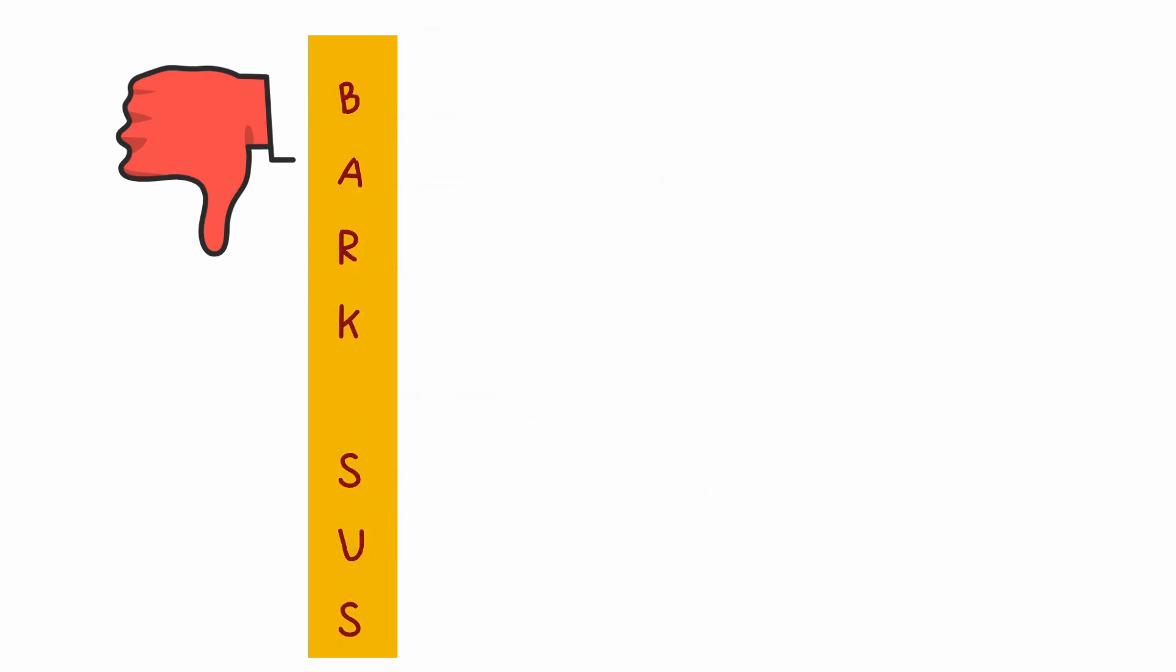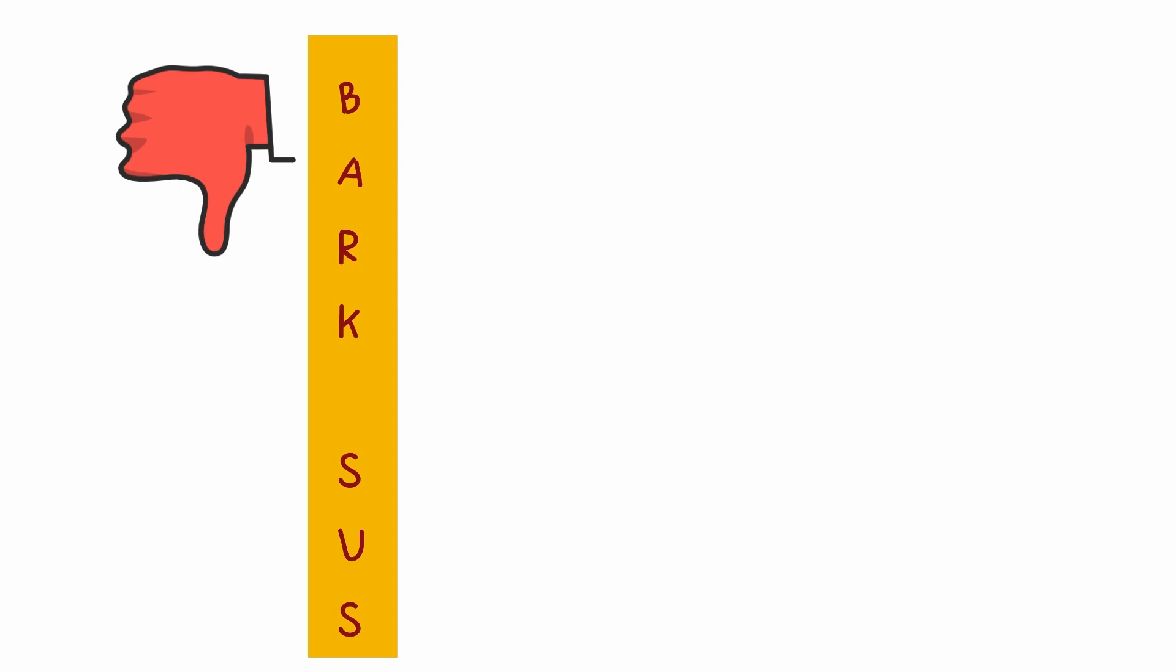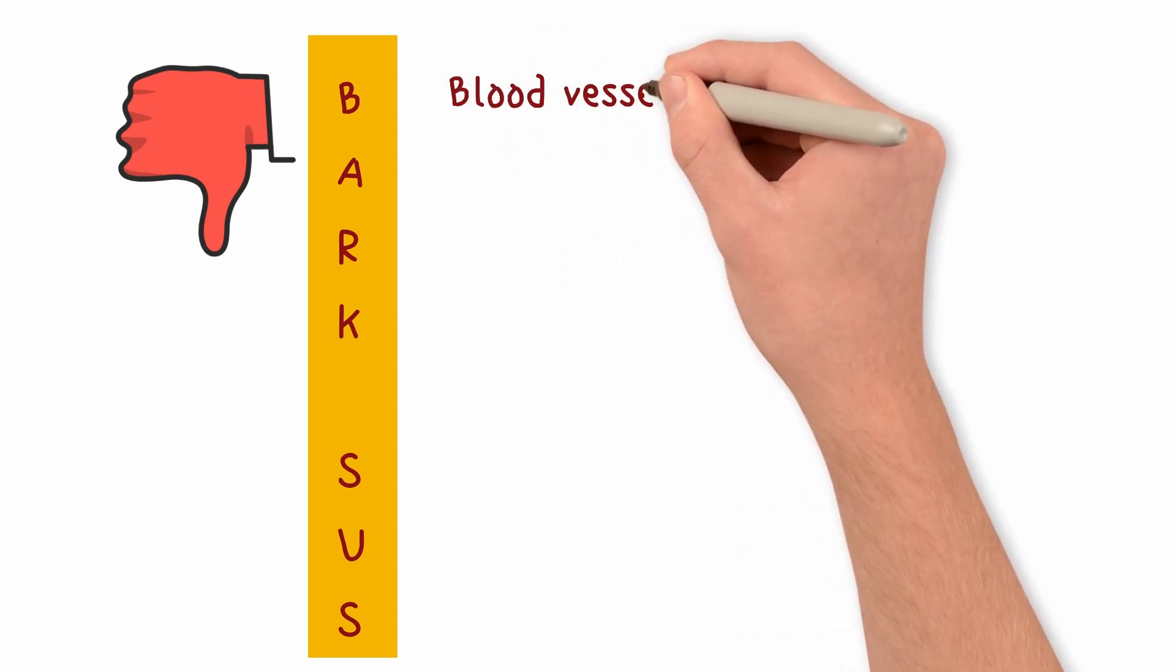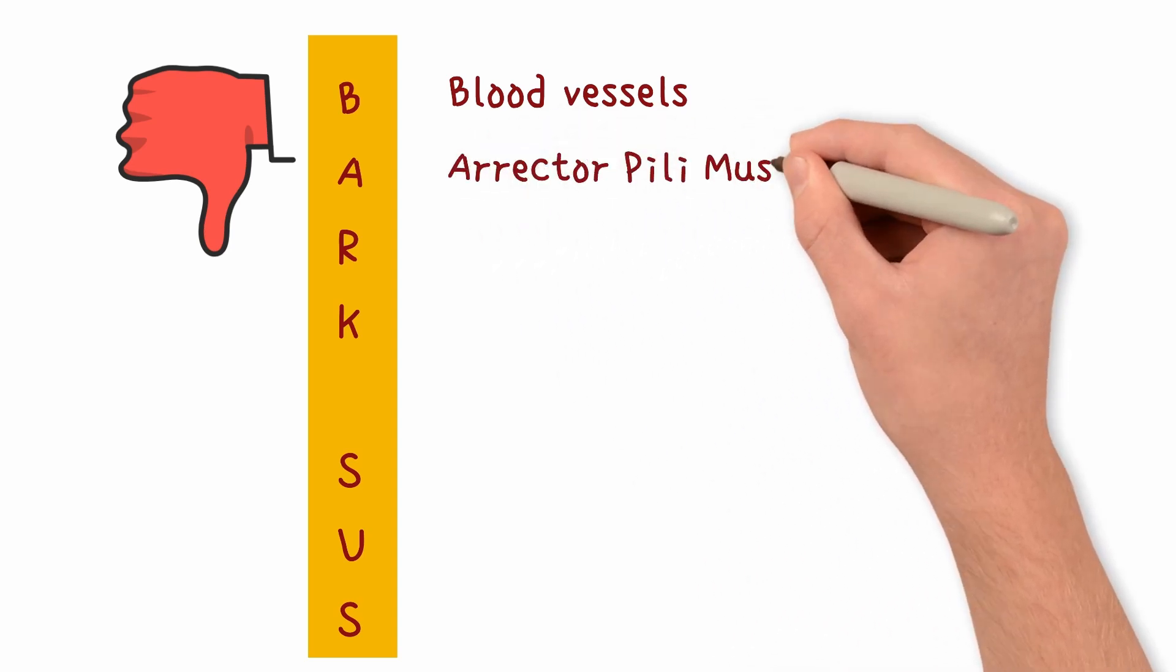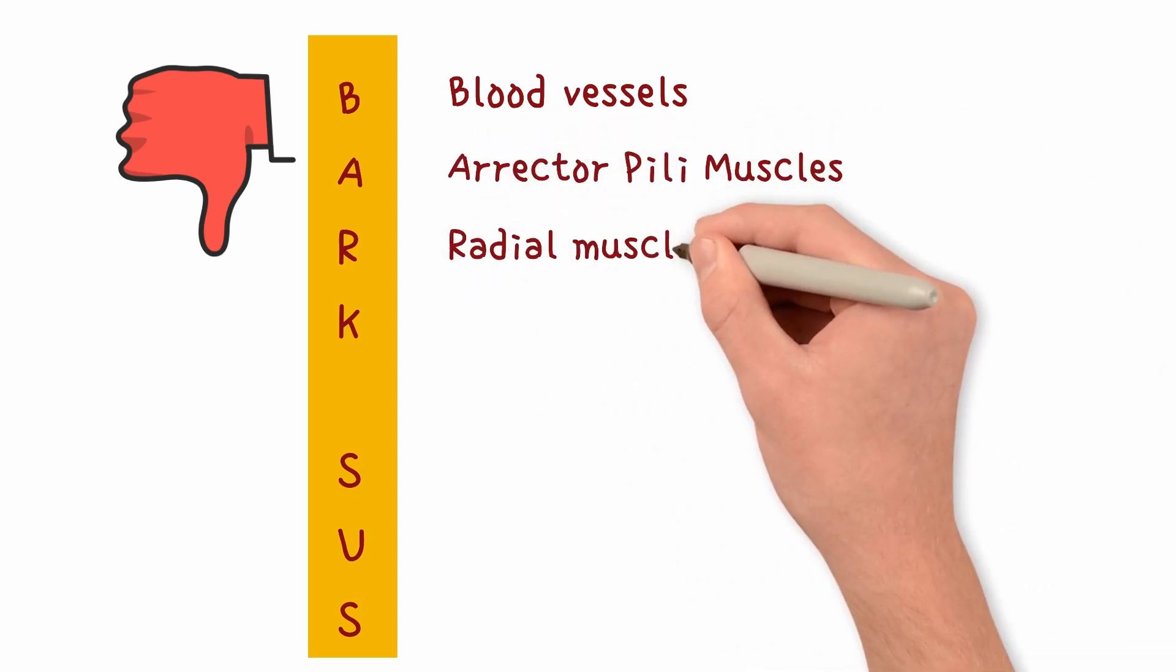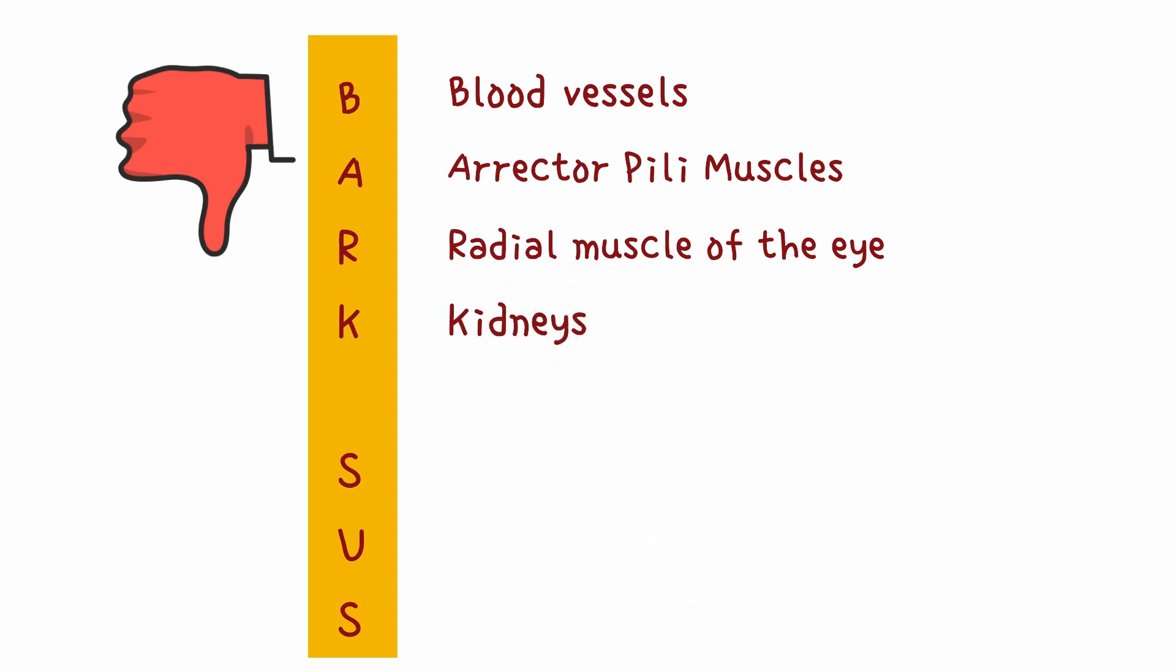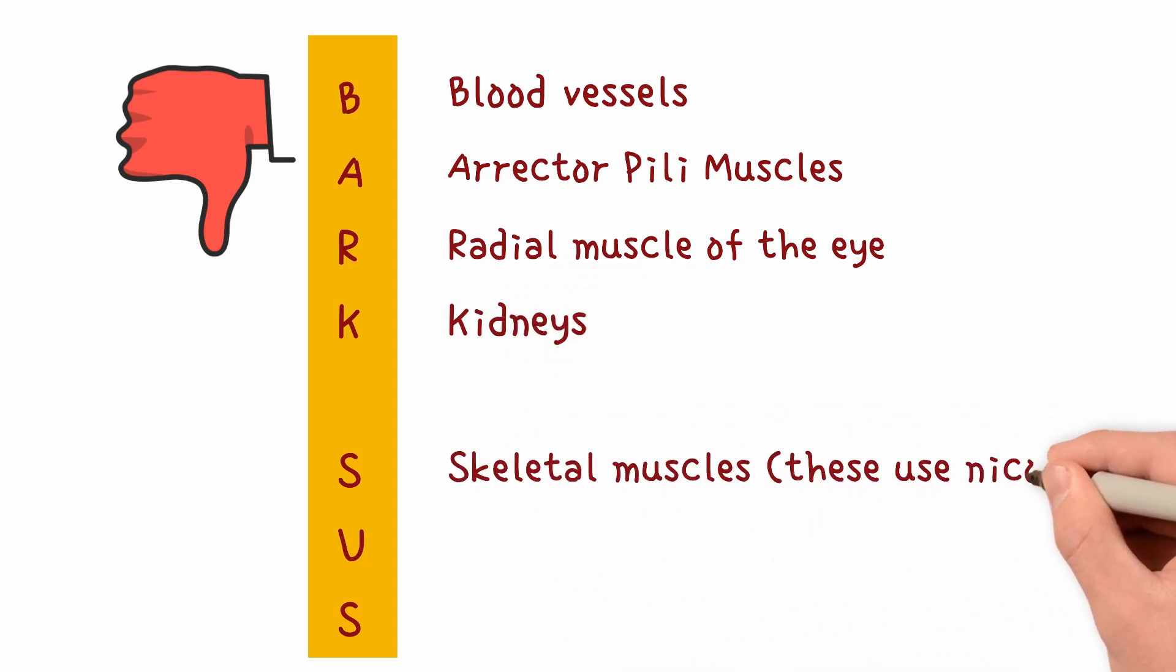These are the seven places where muscarinic receptors and parasympathetic effects are almost negligible or absent. B, blood vessels, most have no innervation. A, erector pili muscles. R, radial muscle of the eye. K, kidney. S, skeletal muscles, as these use nicotinic, not muscarinic.